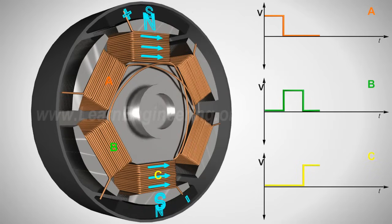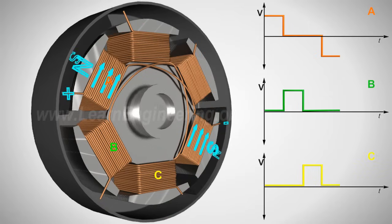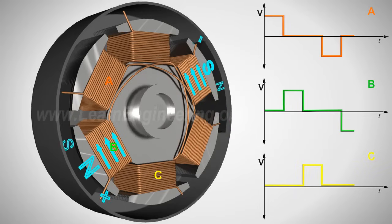After that, coil A is energized with the opposite polarity. This process is repeated and the rotor continues to rotate.